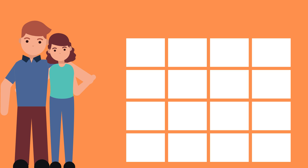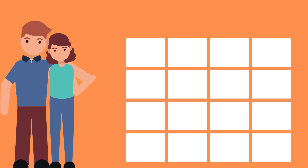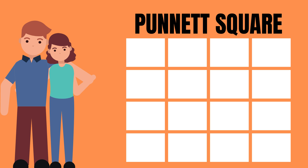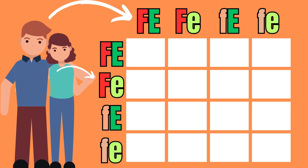To set up the dihybrid cross, we draw a 4x4 table called a Punnett square, and place the alleles of one parent above the table, and the alleles from the other parent to the left of the table, like so.